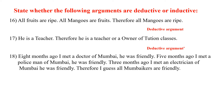Now we come to the eighteenth one. Eight months ago I met a doctor of Mumbai — he was friendly. Five months ago I met a policeman of Mumbai and he was friendly. Three months ago I met an electrician of Mumbai — he was friendly. Therefore I guess all Mumbai people are friendly. Here the conclusion is not implicitly present in the premises and the premises are not sufficient to support the conclusion. So the argument is of inductive type.